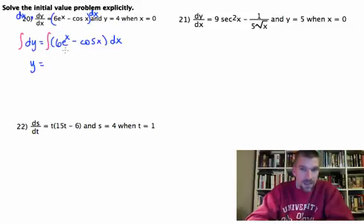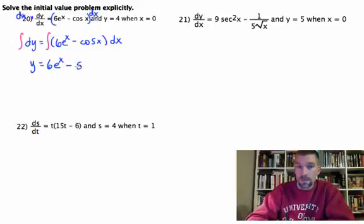On the right, we've got this 6e to the x. Now, we just worked out one that had 6e to the x or a similar problem, so derivative of e to the x is e to the x. So we like that minus and derivative of what is cosine, and that would be sine x. Plus c.